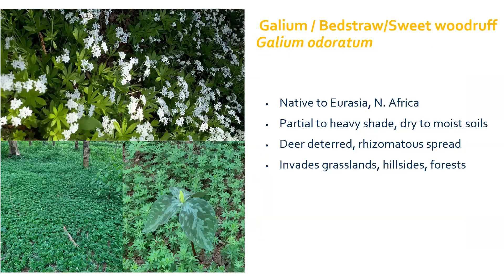Galium is another ground cover gone out of control — specifically one species from Europe called sweet woodruff, Galium odoratum. It is native to Eurasia and parts of North Africa. Just like periwinkle, it can take over shaded areas and the forest understory, but it also tolerates both dry and moist soils. Deer don't like to eat it, which causes preferential grazing — deer will eat the native plants and leave the invasive Eurasian bedstraw alone. It'll take over anywhere it can get a hold of: grasslands, hillsides, and forests. This one is still sold in garden centers, so it's not a good one to have unless you really need the ground cover.